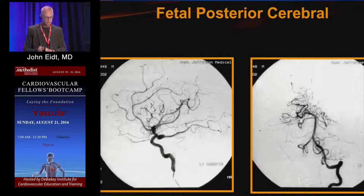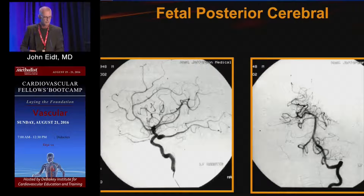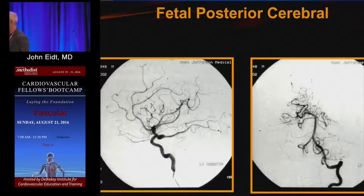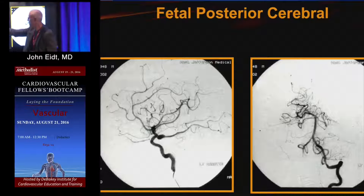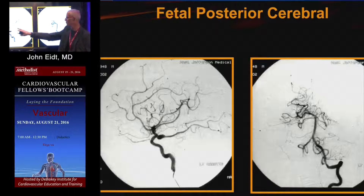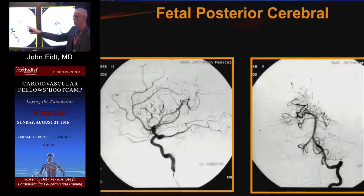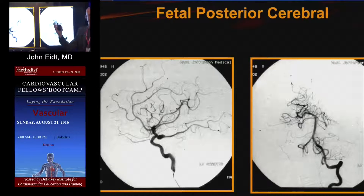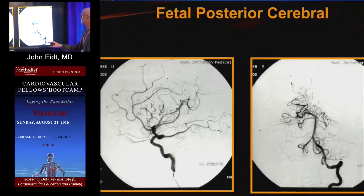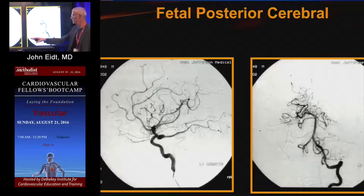This is that persistent fetal circulation. You can see anterior cerebral, middle cerebral, posterior cerebral. Normally you don't see posterior cerebral. If you shoot a lateral head film and see posterior circulation, you know it's a fetal circulation.